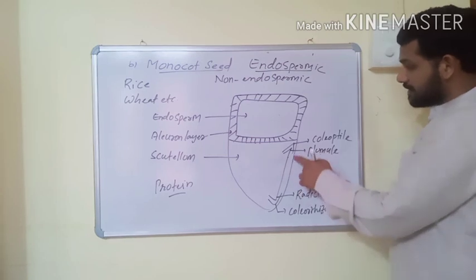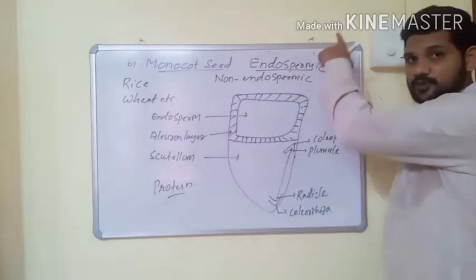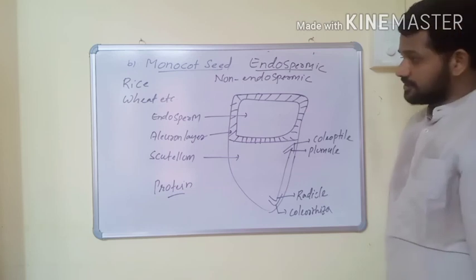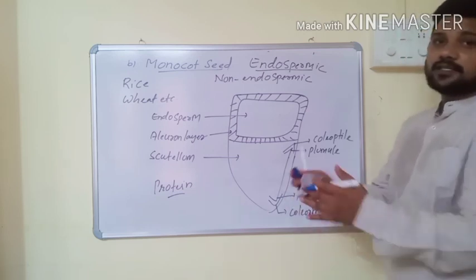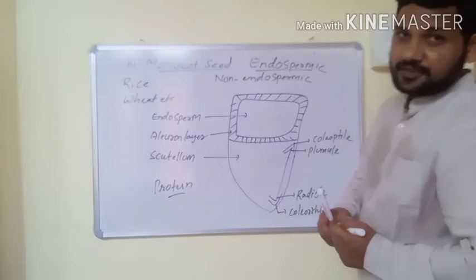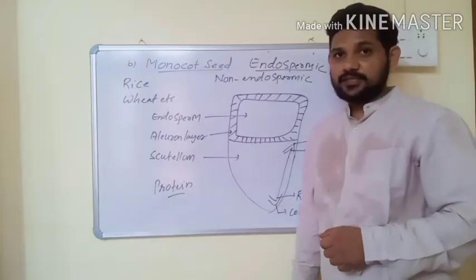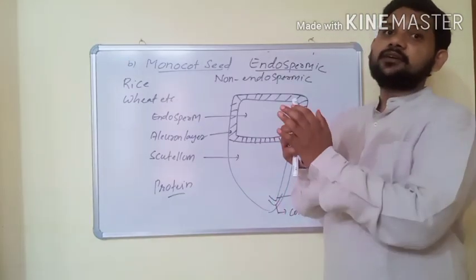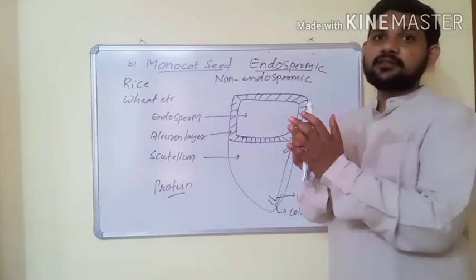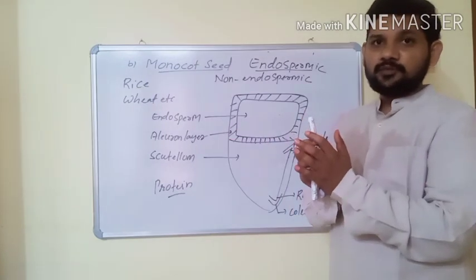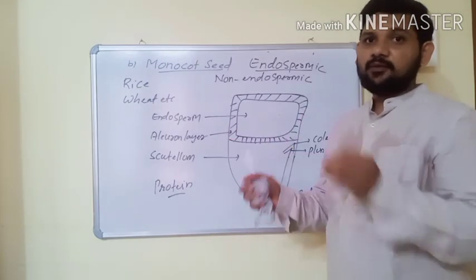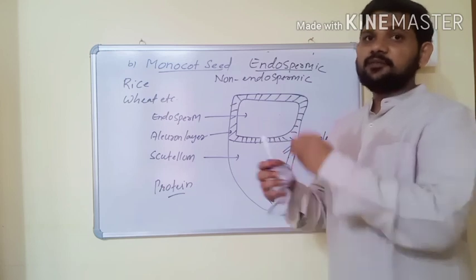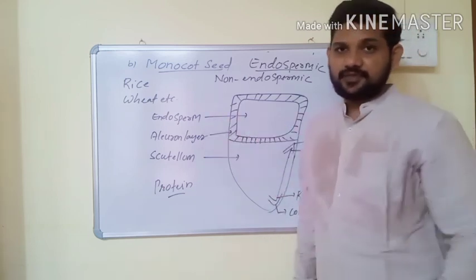After germination, similarly, the plumule is transferred into the shoot system and the radicle is transferred into the root system. These are the two different types of seeds - dicot and monocot seeds. From this topic, the different organs of the angiospermic plant are totally completed. One more topic of morphology will be discussed in the next video.